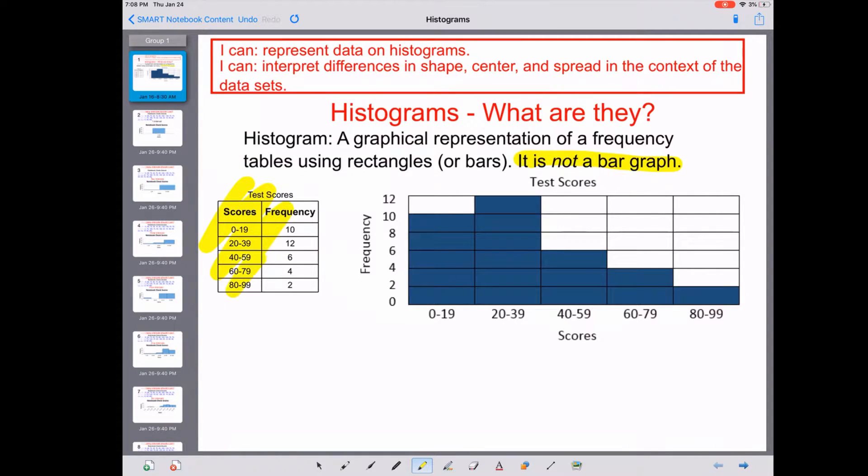Just like our tables do over here, I have a frequency table here already made up. They represent test scores. You see that we have 10 students who scored between 0-19, 12 students that scored between 20 and 39, so on and so forth. A histogram we have right over here shows us that in a graphical representation. You see the frequency is marked over here on the left and the scores are represented down here in their intervals on the bottom.